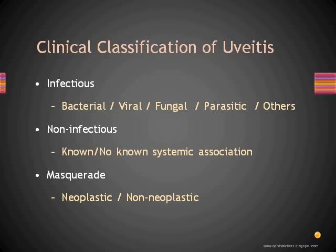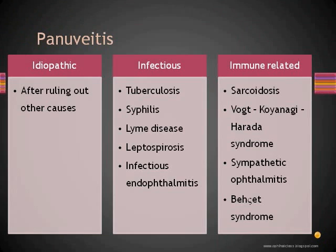The same classification holds true for causes of pan uveitis. The major causes are infectious or non-infectious. Non-infectious causes are usually immune related. When neither infectious nor non-infectious cause is found, the diagnosis would be idiopathic — but only after ruling out all other causes.